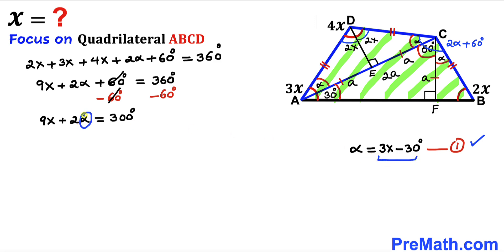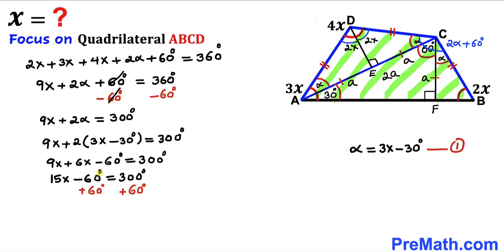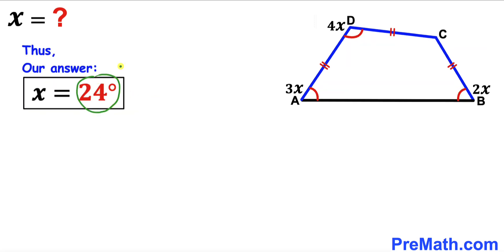Substituting equation one (alpha = 3x − 30°) into 9x + 2α = 300°, we get: 9x + 2(3x − 30°) = 300°, which gives 9x + 6x − 60° = 300°, so 15x = 360°. Dividing both sides by 15, our angle x equals 24 degrees. Thanks for watching — please don't forget to subscribe for more videos!